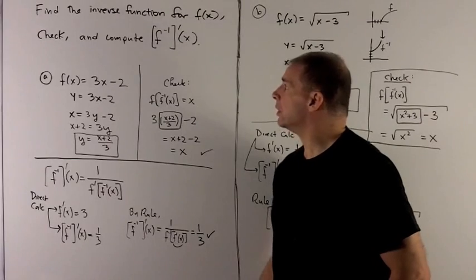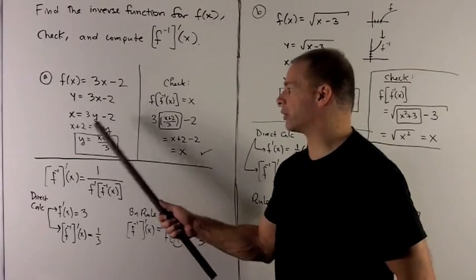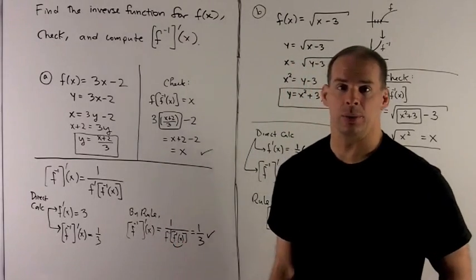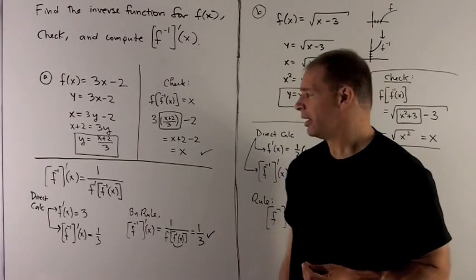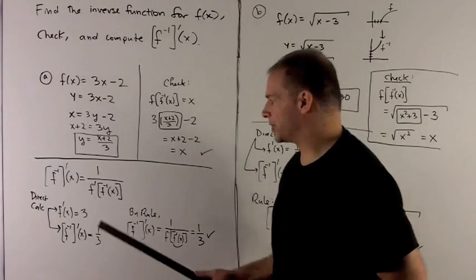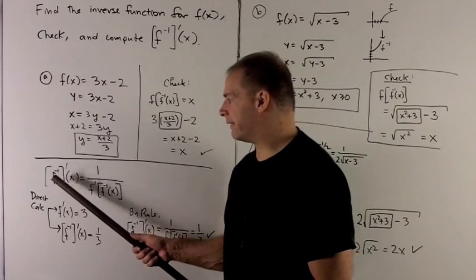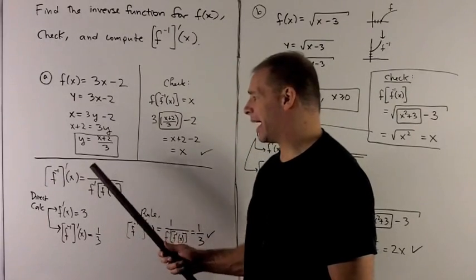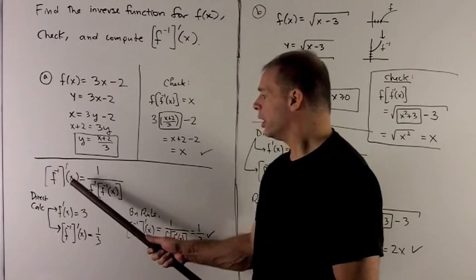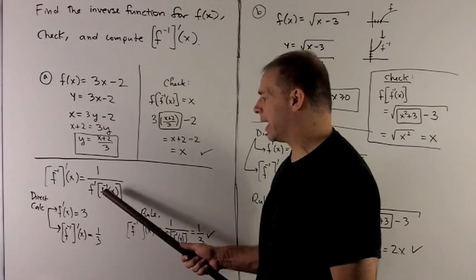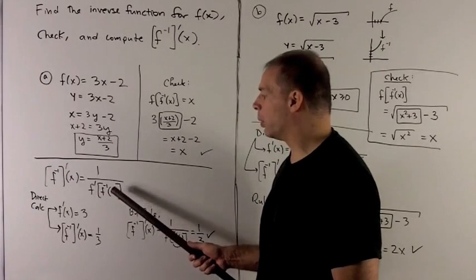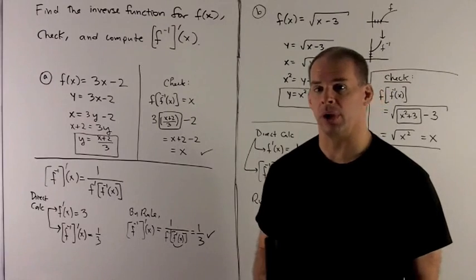Now for the derivative, of course we could just take the derivative of this and we're done. That's no problem. The point here is to illustrate the rule for the derivative, which is given by the derivative of the inverse function, is given by, you put 1 over the derivative of your original function, and then you evaluate at the inverse function at your point. So this is what I really want to get across.